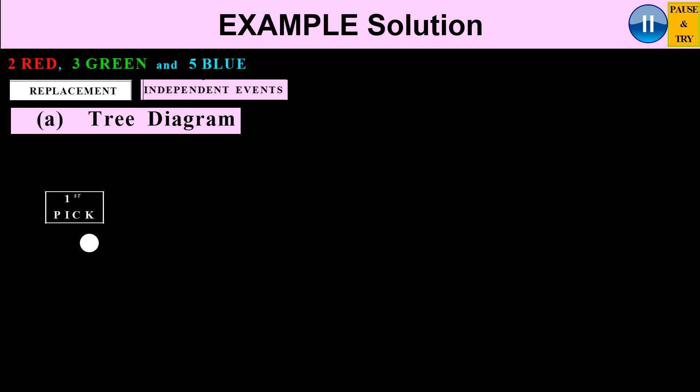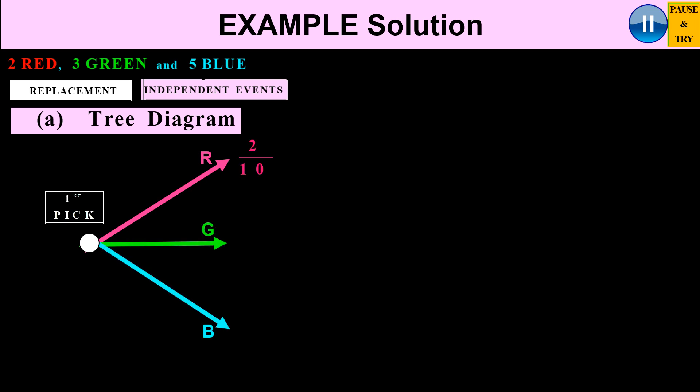For the first pick, I can pick a red paper clip, a green one, or a blue one. There are two red paper clips and a total of 10, so that's 2 over 10. Then I get 3 over 10 for green and 5 over 10 for blue.